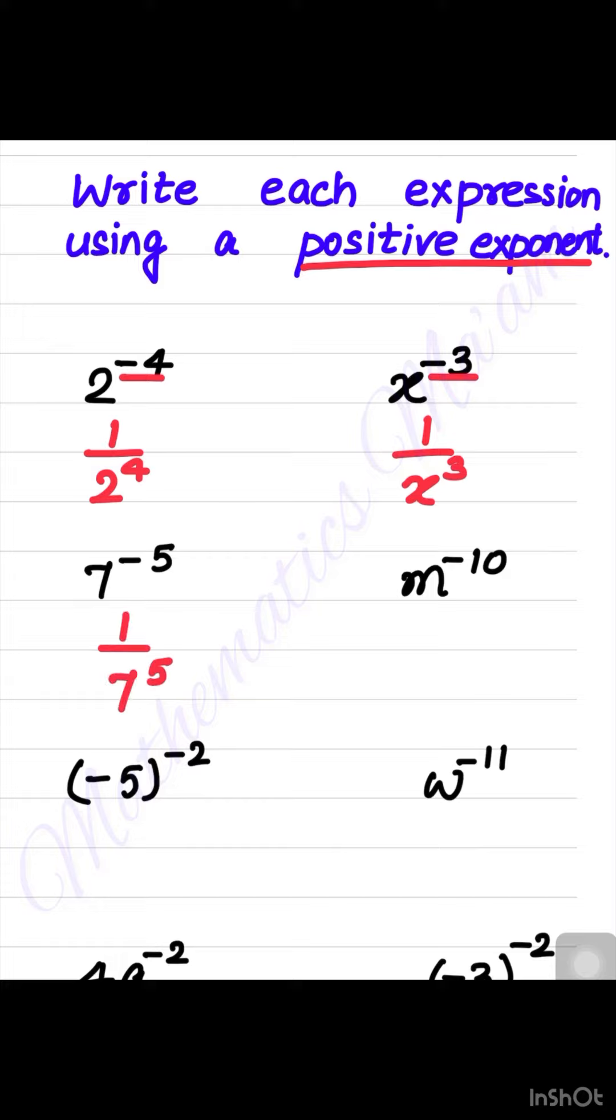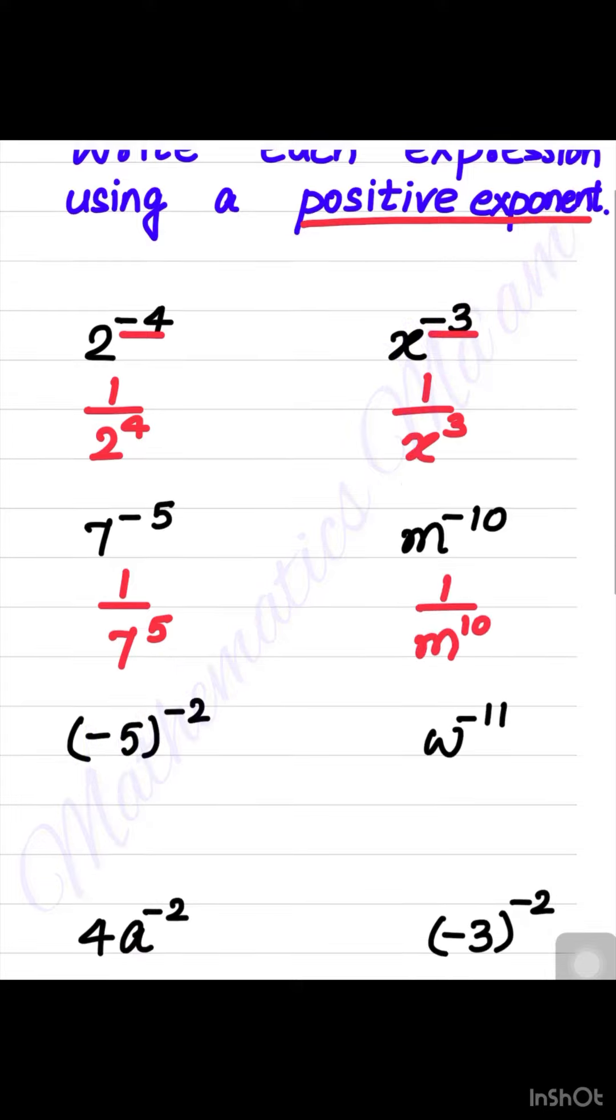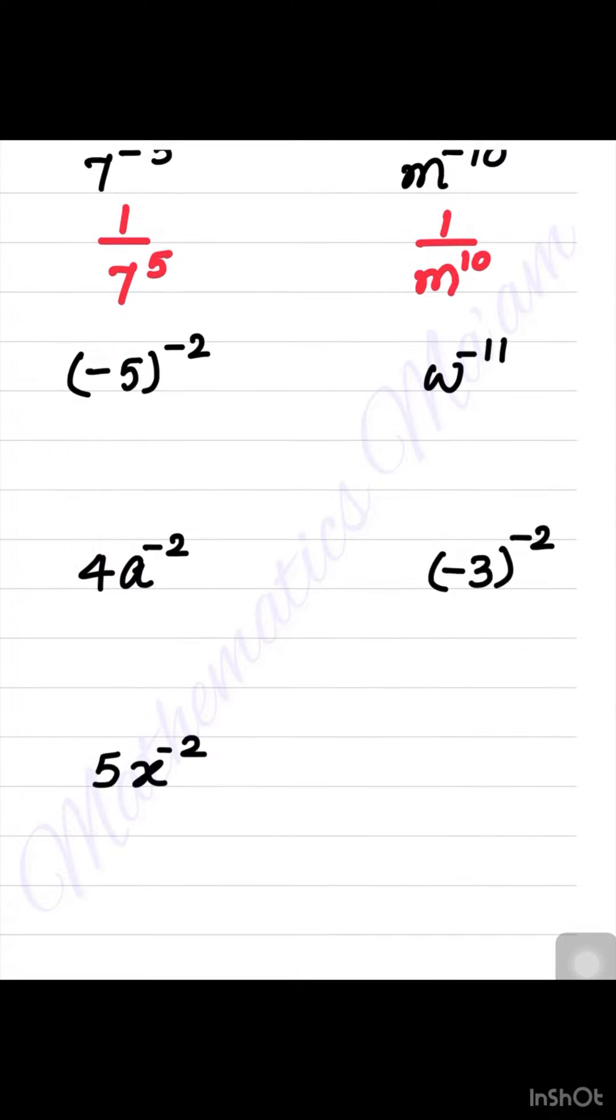7 to the power minus 5, just write it as 1 by 7 to the power 5. Similarly, if you have m to the power minus 10, you can write it as 1 by m to the power 10.